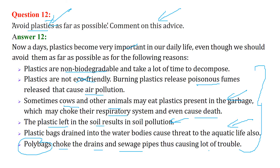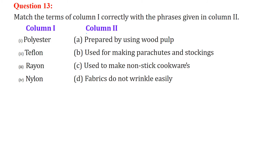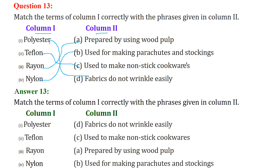Match the terms with the phrases: Polyester — polyester fabrics do not wrinkle easily. Nylon — nylon is used for making parachutes and stockings. Teflon — teflon is used for making non-stick cookware. Rayon — rayon is prepared using wood pulp.